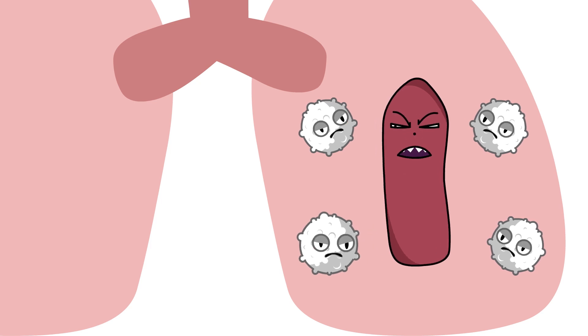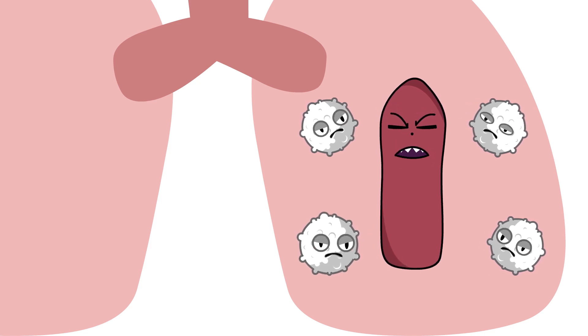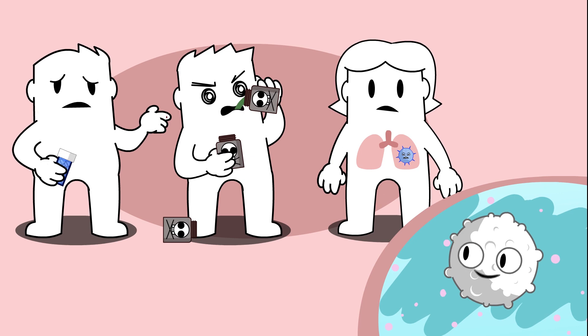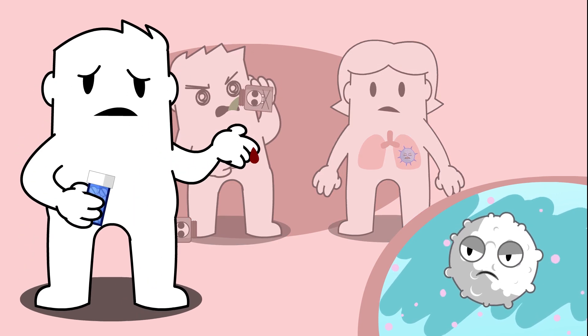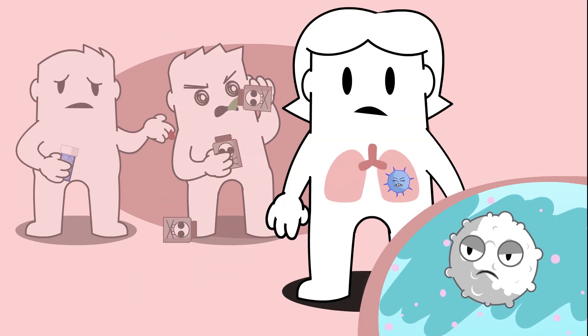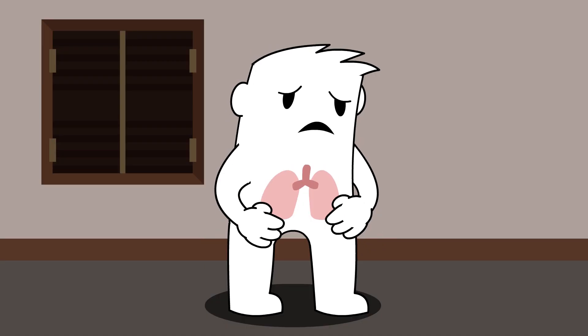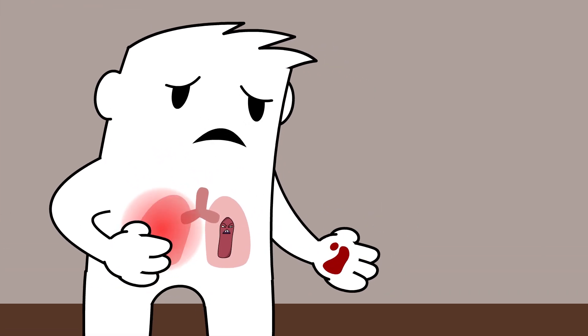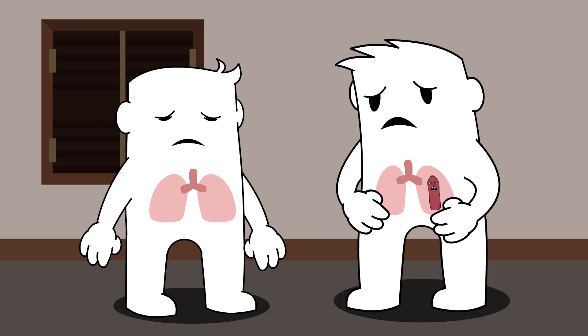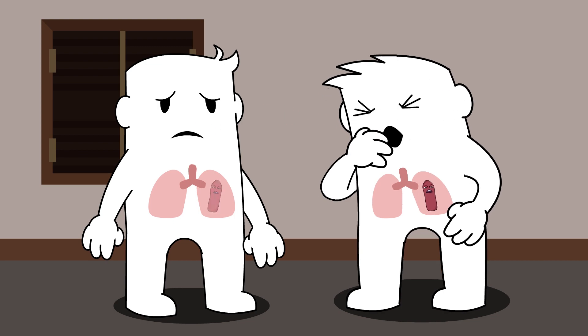Here we see that the defense system cannot defeat TB. This can also happen when an immune system is weakened due to health changes from diabetes, drug use, and other conditions. The person will start to get sick with symptoms of TB disease. A person with active TB disease who is not on treatment can spread TB disease to others.